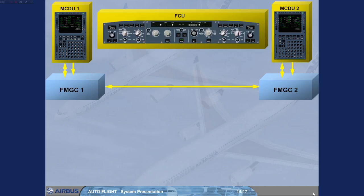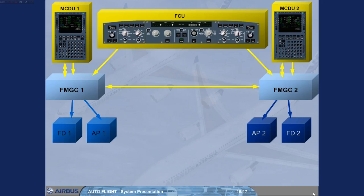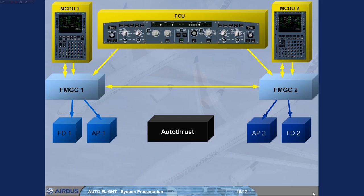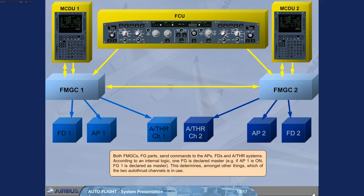The inputs from the FCU are fed to both FMGCs. Both FMGCs' flight guidance parts send commands to the autopilots, flight directors, and autothrust systems. According to internal logic, one flight guidance is declared master. For example, if Autopilot-1 is on, flight guidance-1 is declared as master. This determines, amongst other things, which of the two autothrust channels is in use.